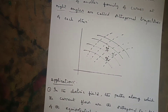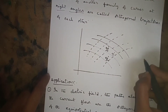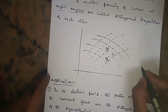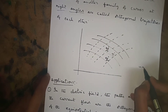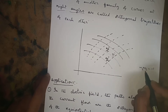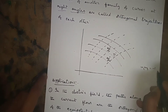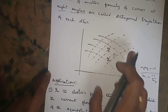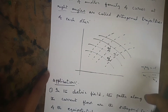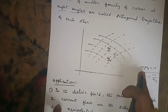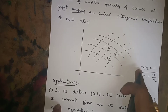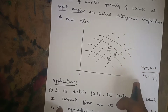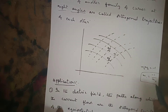Remember: orthogonal trajectory means it cuts every member at right angle. The first curve has slope m1 and the second curve has slope m2. Since they cut at right angles, m1 × m2 = −1, which means m1 = −1/m2. This is the key slope condition to remember.